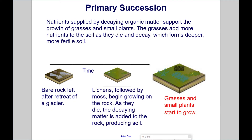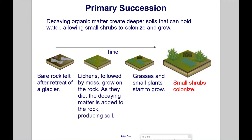Nutrients supplied by decaying organic matter support the growth of grasses and small plants. The grasses add more nutrients to the soil as they die and decay, which forms deeper, more fertile soil. This allows small shrubs to colonize and grow.